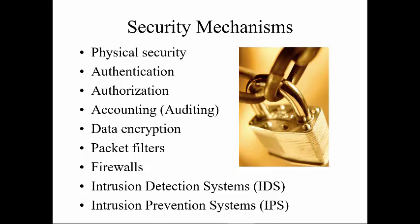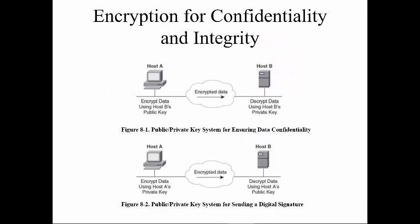Since we've already talked about AAA, what about CIA — confidentiality, integrity, and availability? How do we know our data is going to be encrypted? This could be a public and private key system, or PKI system. We encrypt data between our hosts: one has a private key, one has a public key, and that data is encrypted in transit. You use the traded public keys to decrypt the data, which verifies that data being transmitted won't be compromised — confirming both confidentiality and integrity of the message.